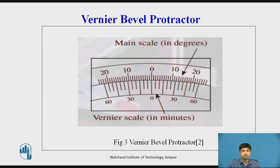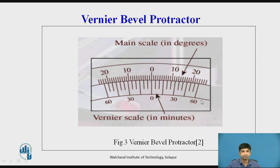The main scale is graduated in degrees of arc. The Vernier scale has 12 divisions on each side of the center zero, marked from 0 to 60 minutes of arc, so that each division equals 1/12 of 60, which is 5 minutes of arc.